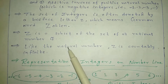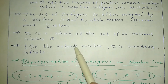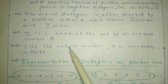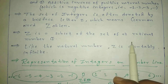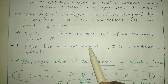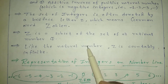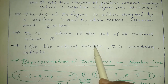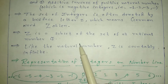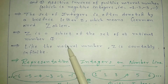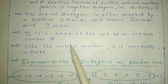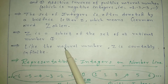Integers, denoted as Z, are a subset of the set of all rational numbers Q. We know that Z represents integers and Q represents rational numbers. Rational numbers include all numbers — fractional numbers, decimal numbers, natural numbers, and so on. Therefore, Z (integers) is a subset of Q (rational numbers).